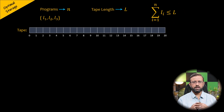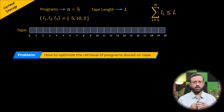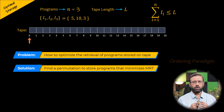Let us consider an example with 3 programs, so n is 3. The length L1 of program 1 is 5, the length L2 of program 2 is 10, and the length L3 of program 3 is 3. The problem is how to optimize the retrieval of these programs stored on the tape. Whenever a program is retrieved, the tape is assumed to be initially positioned at the front. We need to find a permutation such that the mean retrieval time is minimized. These problems fit in the category of the ordering paradigm.